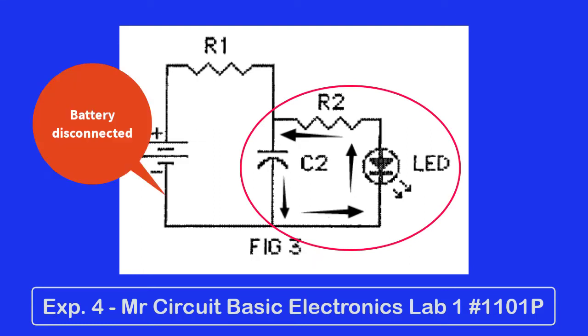The capacitor C2 discharges through the LED, back up through R2 to the other side of the capacitor, keeping the LED lit until the capacitor is discharged.